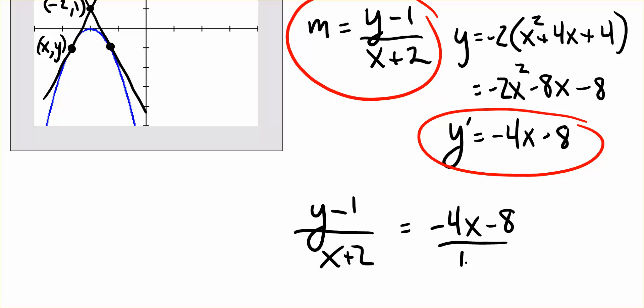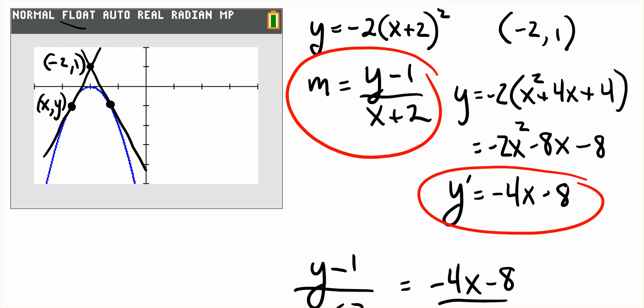If we want to cross multiply, we can put the right side over 1. Now at this point, we need to make a crucial substitution — this is where the whole problem lies. We have two variables, and we can only have one. We're going to substitute for y in terms of x. Fortunately, we have the original function: negative 2 times x plus 2 quantity squared equals y.